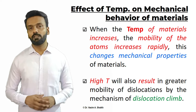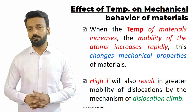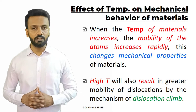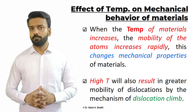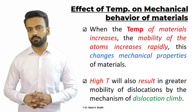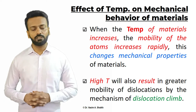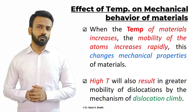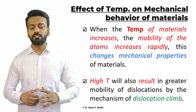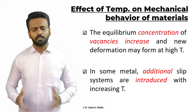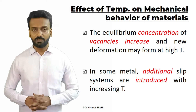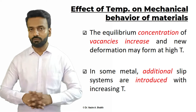Creep becomes important at an elevated temperature. So let us see what is the effect of temperature on the mechanical behavior of metals. When the temperature of any material increases, the mobility of the atom also increases, which in turn will change a lot of mechanical properties in the material. High temperature will result in the movement of dislocations because of dislocation climb. The concentration of vacancies also increases and there are additional slip systems which are active when the temperature of the material increases.